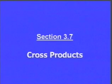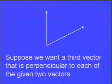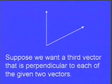We're actually going to learn three ways to do cross products, and you can choose the way that you like. Here's why we're doing cross products to start with: suppose we want a third vector that's perpendicular to each of two given vectors. We'll be given two vectors and asked to come up with a third vector that's perpendicular to both of them.